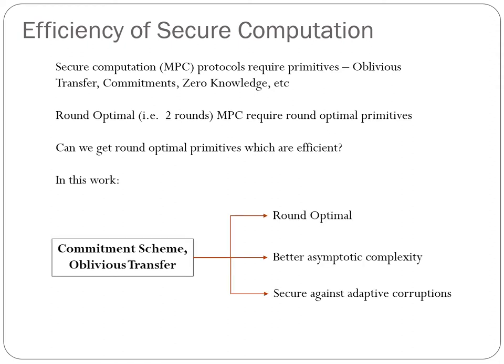In this work, we address it in the positive. We construct commitment scheme and oblivious transfer protocols which are round optimal, provide better asymptotic complexity compared to state-of-the-art protocols, and some of them are also secure in the strongest security model — that is, secure against adaptive corruptions.